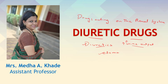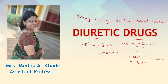Body fluids are removed out of the body — whatever is in excess is removed by increasing the urine output. Now, how does urine output increase with these diuretic drugs? That is by increasing sodium ion and water excretion. As the sodium ions are removed out of the body — an electrolyte is moving out — water will also be excreted out along with it.